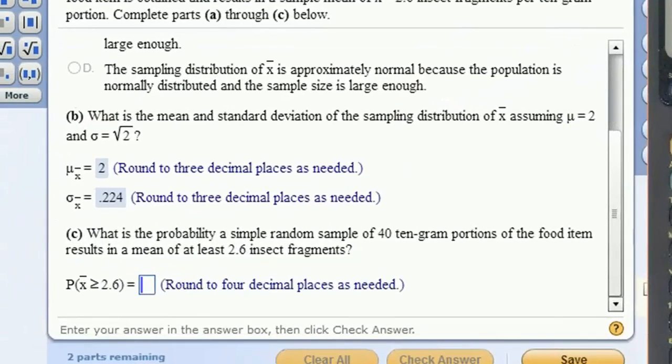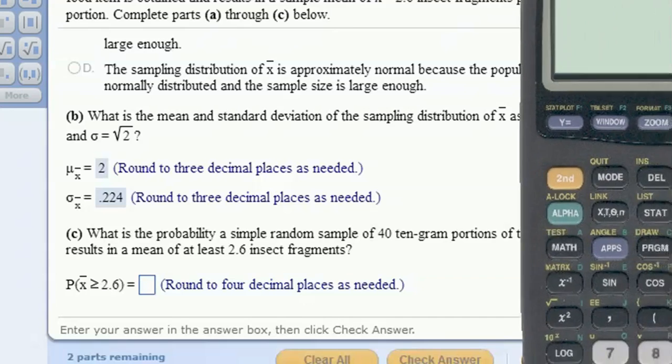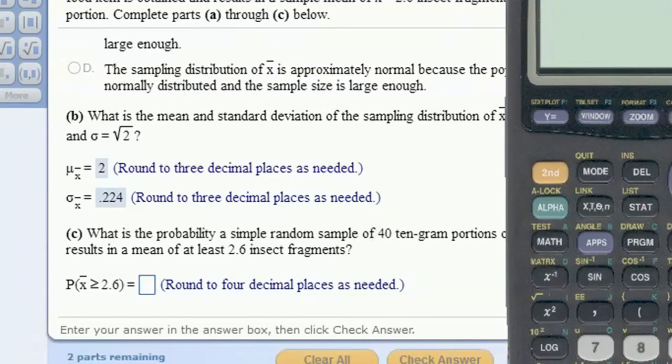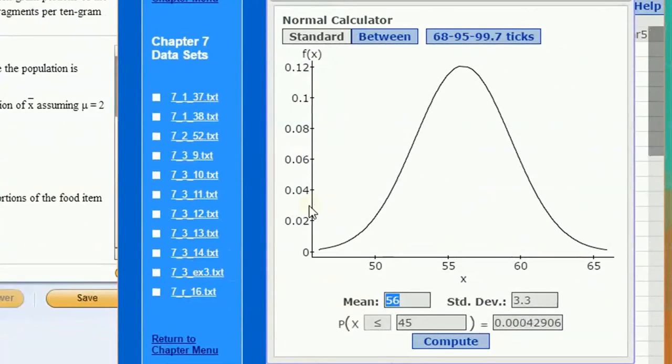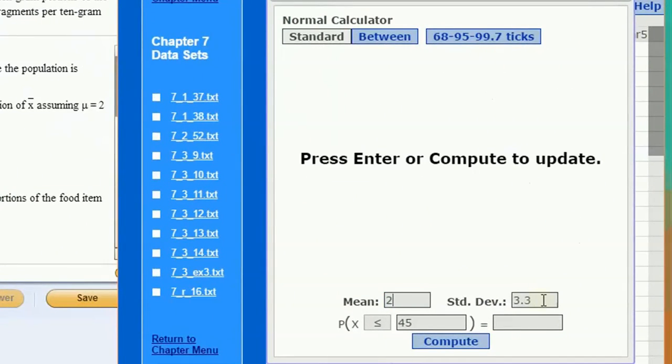Okay, now given that this is coming from the Central Limit Theorem, what we can do now is put this into our probability calculator. If we have a mean of 2 for this distribution and a standard deviation of 0.224, we can calculate these probabilities.